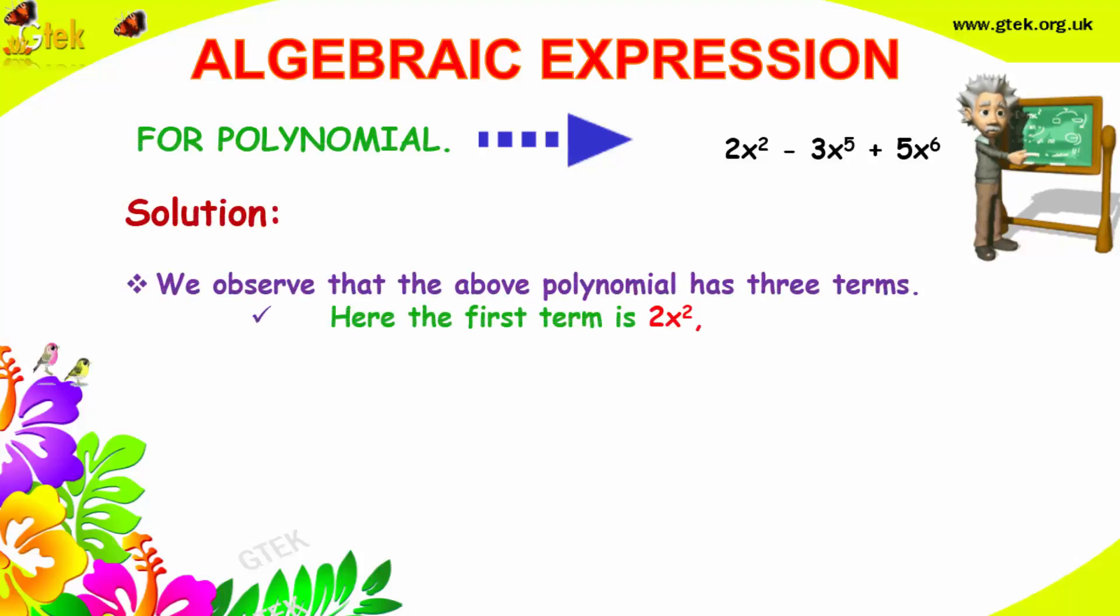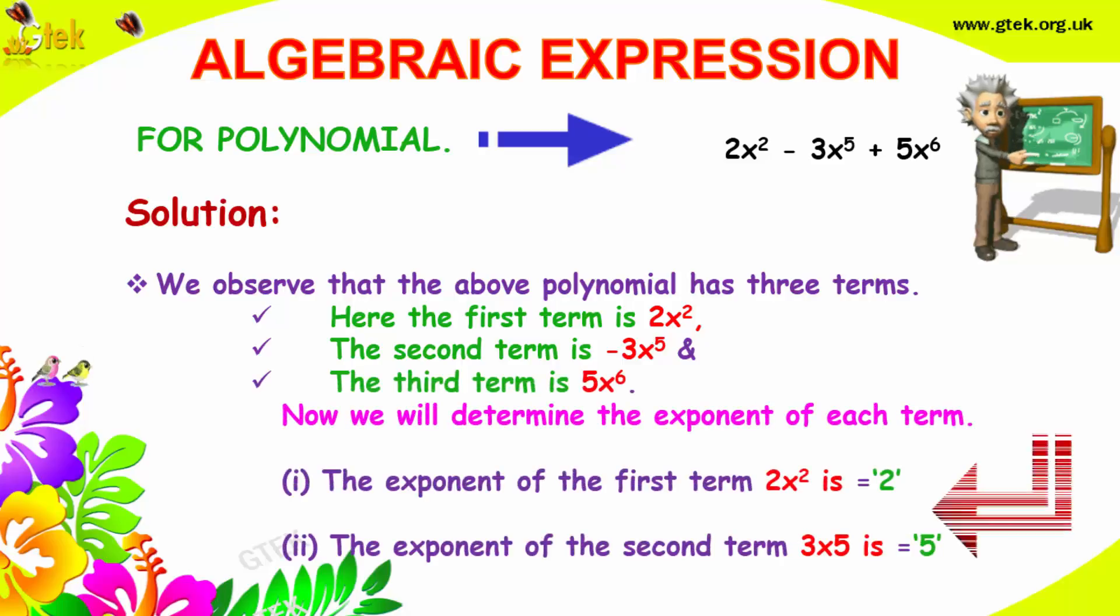As he told, we got our polynomial: 2x² minus 3x power 5 plus 5x power 6.